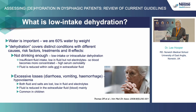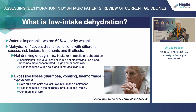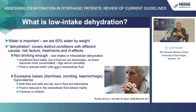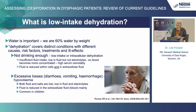So water is important. 60% of our body weight is water — a bit more when we're born, a bit less as we get older, but a huge amount. Dehydration covers several distinct conditions. The one we're going to be talking about is low intake or intracellular dehydration. In intracellular dehydration, because we drink too little, our body contains too little fluid but the same amount of electrolytes as usual, meaning our fluid is more concentrated. That's equivalent to a rise in serum osmolality.